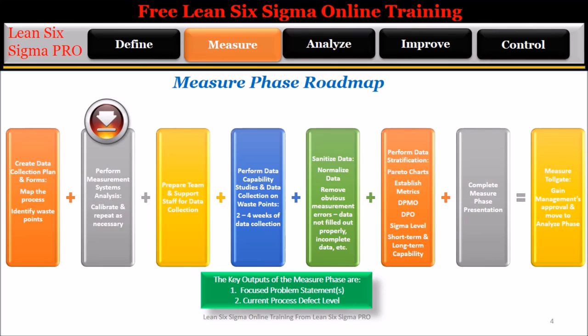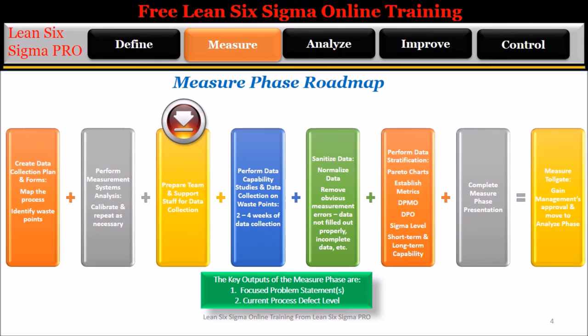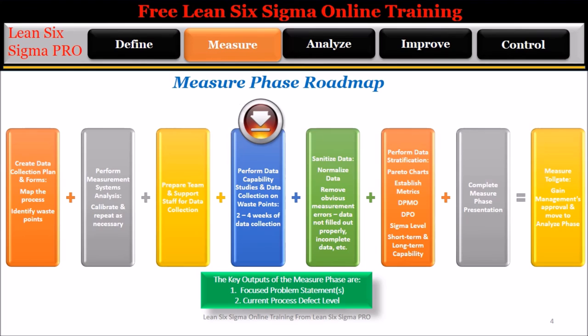Step 3: Prepare team and support staff for data collection. Support staff are those people who are not a part of the project team but who will play a vital role during the data collection process of the measure phase. Step 4: Perform data capability studies and data collection on waste points at the gemba. Data collection typically lasts 2 to 4 weeks in total duration.